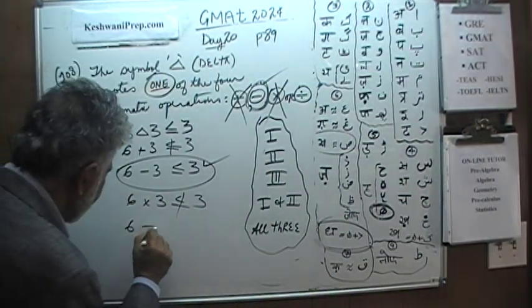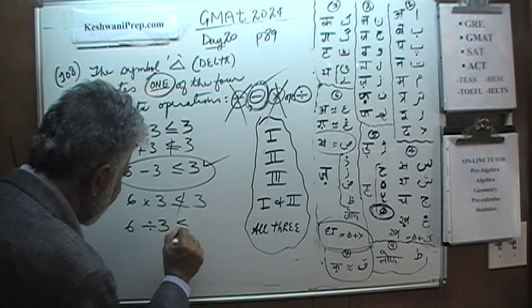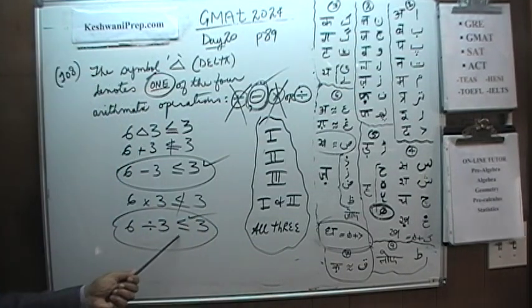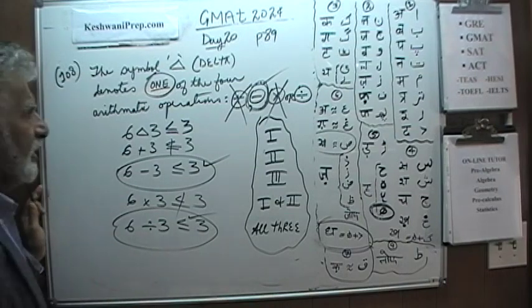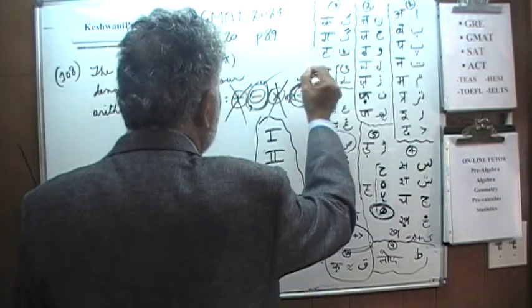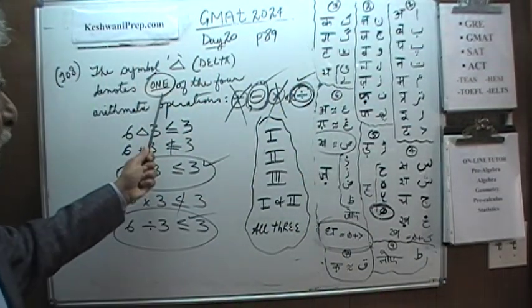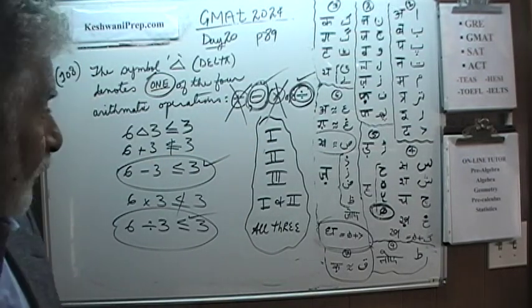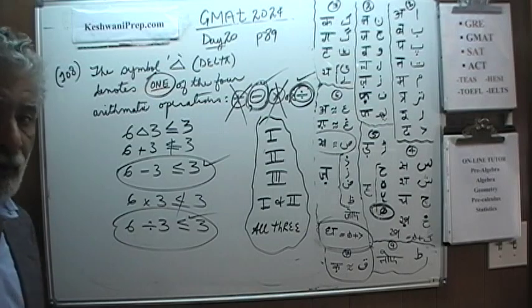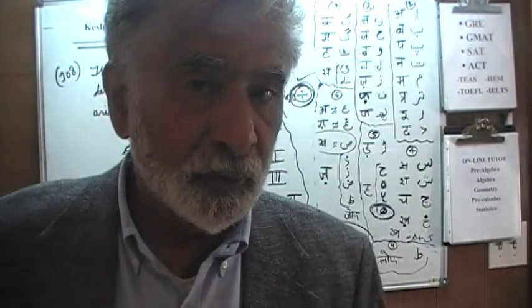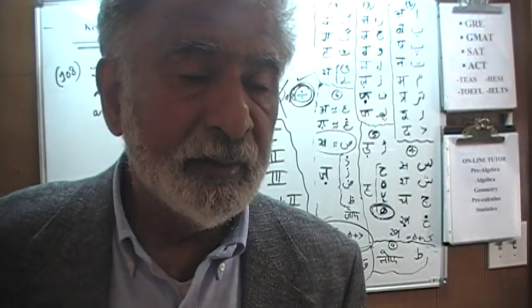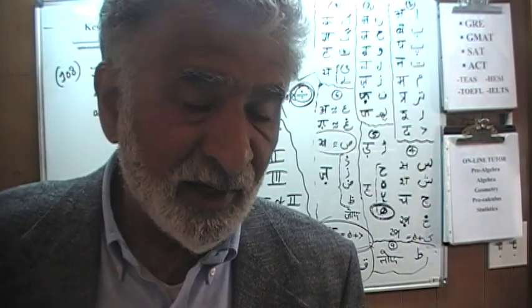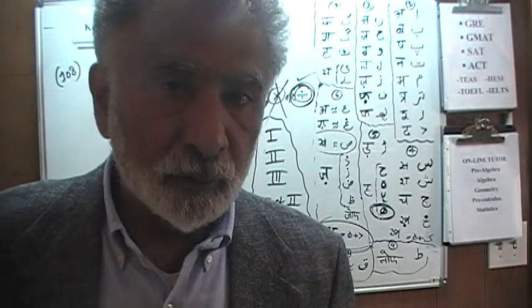Which means this operation that is given to us, one of the operations, it could be subtraction. Let's do the multiplication. 6 times 3 is not less than or equal to 3. So it's not the multiplication. Let's do the division. 6 divided by 3 is less than or equal to 3. But that is also true. 6 divided by 3 is 2 which is less than or equal to 3.